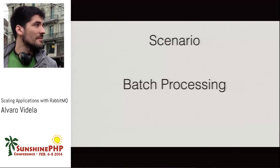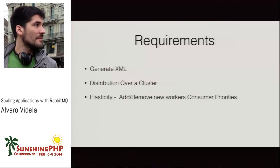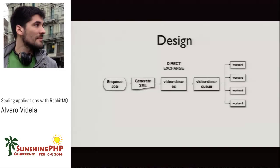To end the talk I want to show some examples of what can be done with RabbitMQ. The most common one is batch processing. Let's say we have a system that needs to generate XML, distribute data across a cluster, and have elasticity — the ability to add or remove workers with no code changes. By no code changes I mean you can add consumers from one to a hundred and don't need to change anything in the code; just fire a new consumer and it works.